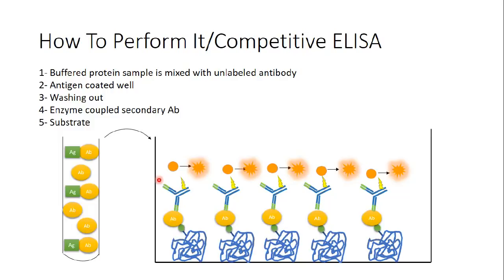In competitive ELISA, the more signal I get, the less protein I have in my sample — because when there is less protein, more free antibodies are in the mixture and bind to the coated antigen, giving more signal. Conversely, when there is more protein in the sample, most antibodies are already bound to the protein, fewer bind to the coated antigen, and I get less signal.